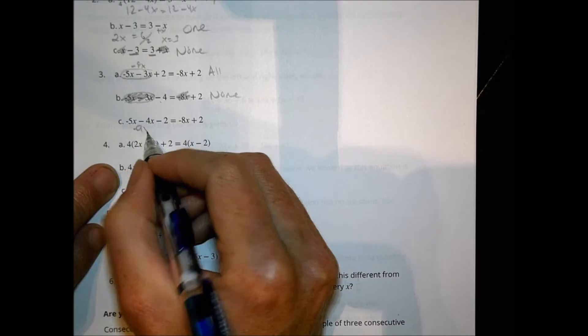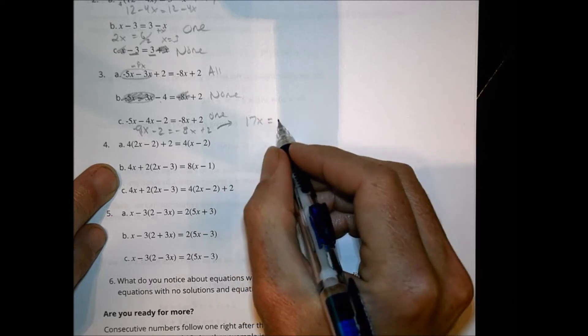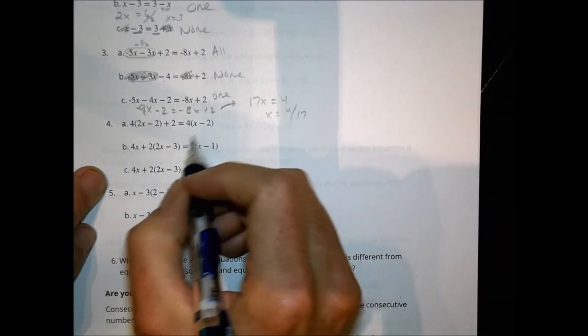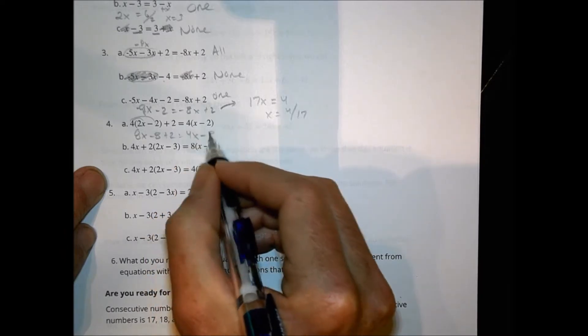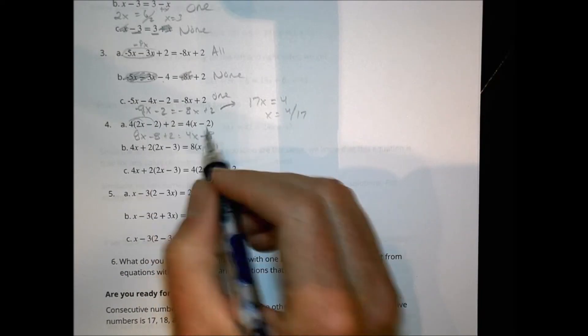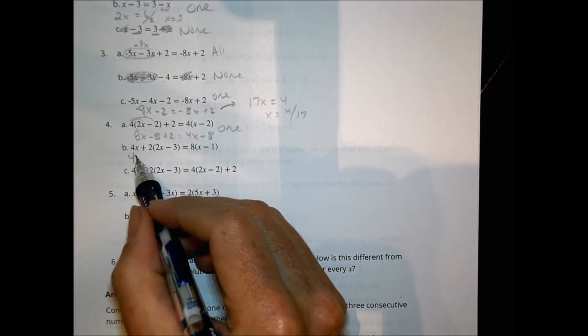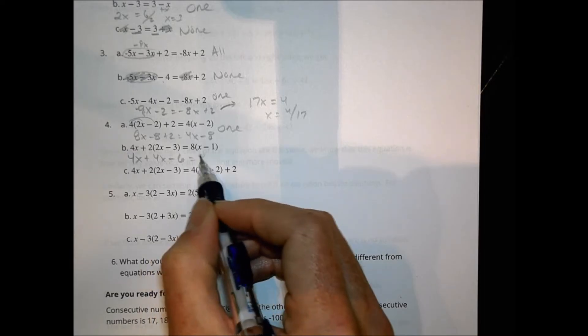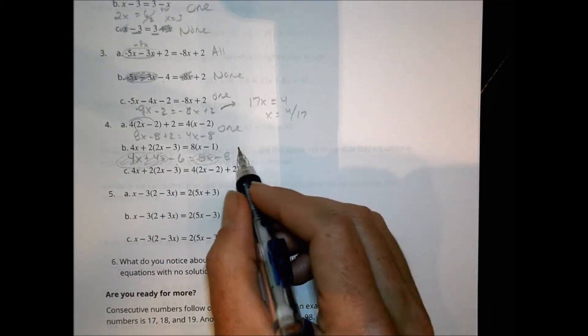Over here we have negative 9x minus 2 equals negative 8x plus 2. We can solve this out to get one solution: we end up with 17x equals 4, so x equals 4 over 17. For problem A on number 4, we distribute: 4 times 2 is 8x minus 8 plus 2 equals 4x minus 8. Since there's an imbalance of x terms, we can solve this for one solution.